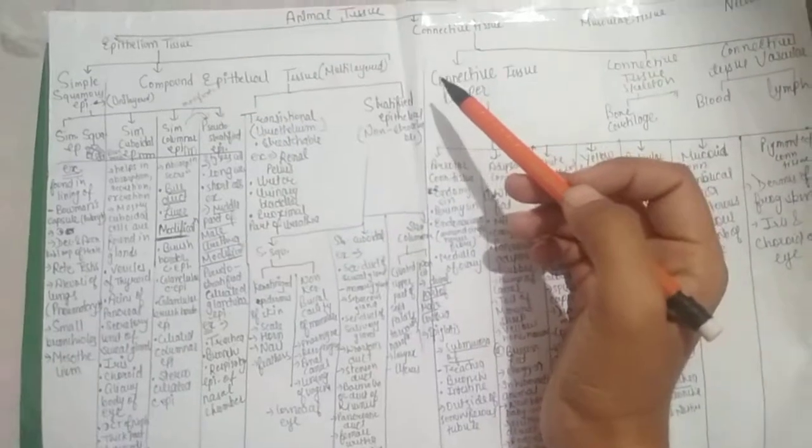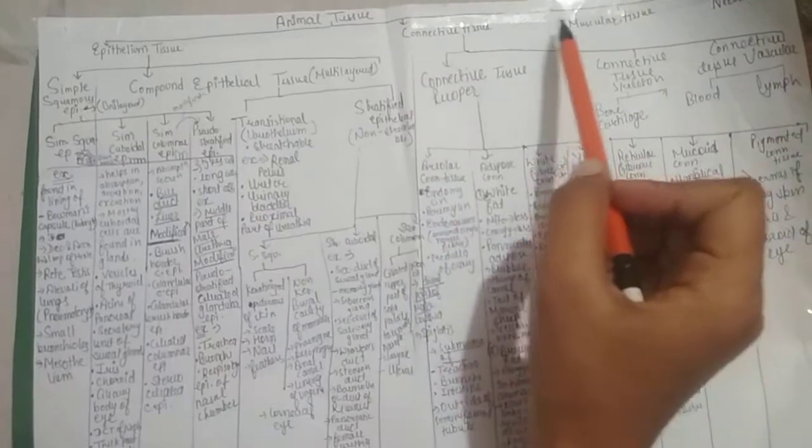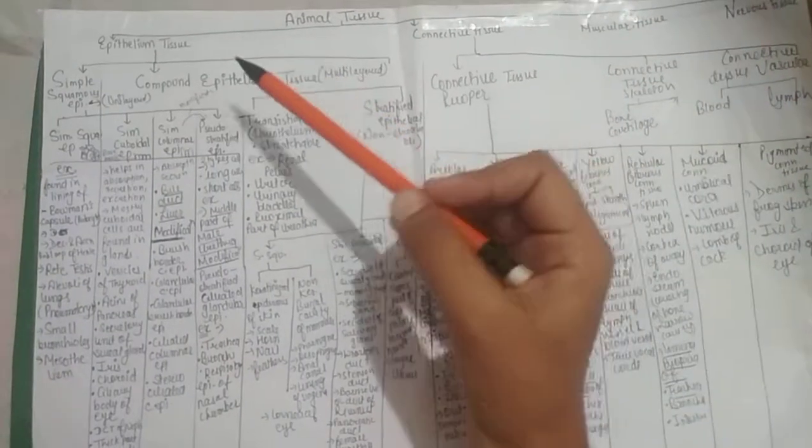Today's our topic is on animal tissue. Animal tissue can be divided into four parts: epithelium tissue, connective tissue, muscular tissue, and nervous tissue.